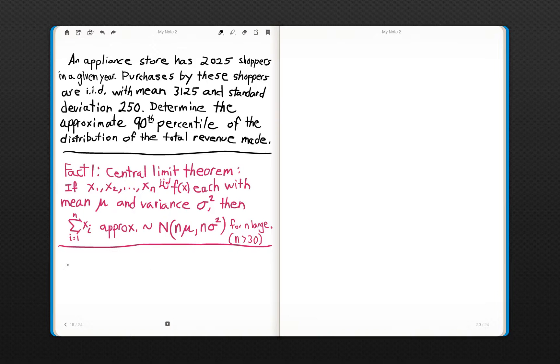To solve this problem, we're going to set up some notation. Let the random variable R equal the sum of x_i from i equals 1 to 2025, and it represents the random quantity of revenue that can be expected for that given year. This is precisely what we'd like to find the 90th percentile of.